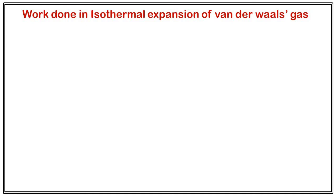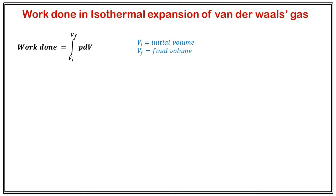Next we will do the same exercise for a van der Waal gas, which represents a real gas. Work done in an isothermal expansion or compression of a van der Waal gas — one that follows the van der Waal equation of state — starts with the same work relation: integration over Vi to Vf of p dV. To replace p, we use the van der Waal equation of state, giving p = RT/(V - b) - a/V².